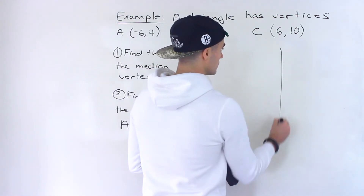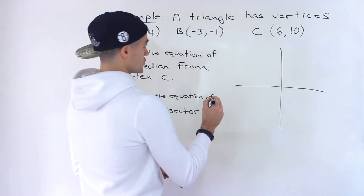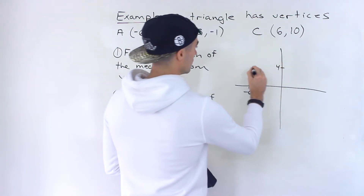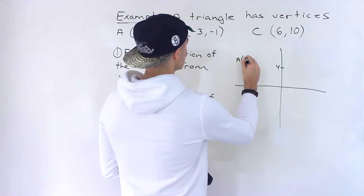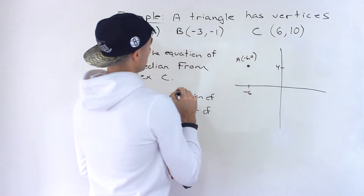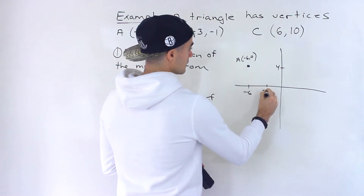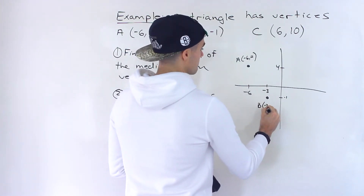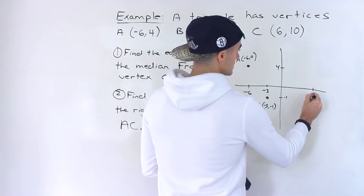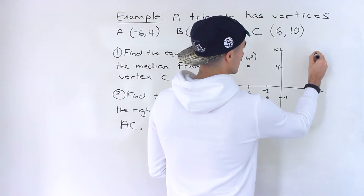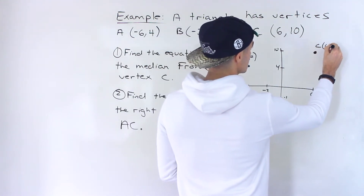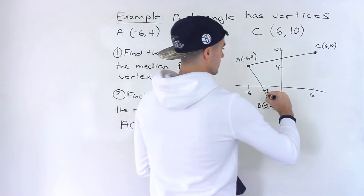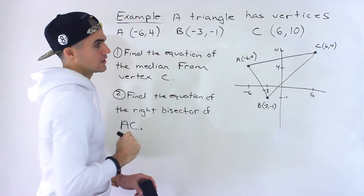First thing I'm going to do is just draw a rough diagram to show you where we're going to be going with this. So we've got negative 6 and 4 for vertex A, negative 3 and negative 1 for vertex B, and then vertex C at 6 and 10. So if we join these vertices, we end up getting a triangle like that.